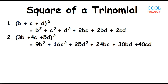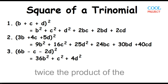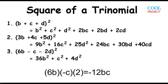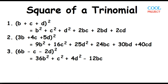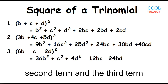Example number 3: The square of the quantity 6B minus C minus 2D. 6B times 6B is 36B squared. Negative C times negative C is C squared. Negative 2D times negative 2D is 4D squared. 6B times negative C is negative 6BC, times 2 is negative 12BC. 6B times negative 2D is negative 12BD, times 2 is negative 24BD.